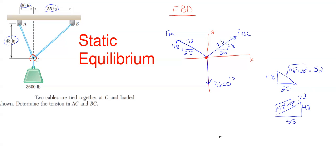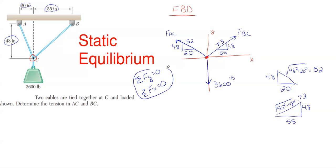We're going to use these dimension triangles as ratios for the slopes of forces FAC and FBC. With all equilibrium problems, you'll need to sum forces in the Y and sum forces in the X, with both equations equaling zero. After drawing your free body diagram, setting up these equilibrium equations is the next step.